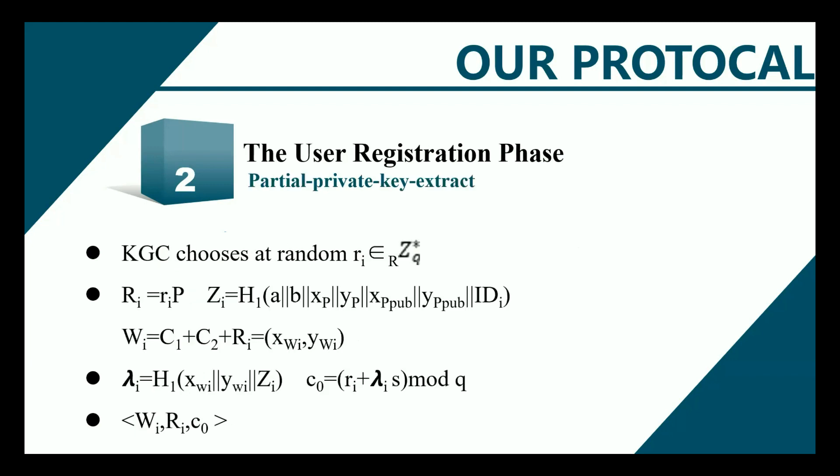Then the partial private key is extracted. Upon receiving the information from the user, the KGC checks the ID_i, selects a random r_i from the set, and computes capital R_i, Z_i, and W_i. It then computes lambda_i and C0. After all computations, it sends the message W_i, R_i, and C0 to the user, where lowercase C0 is the partial private key of U_i.